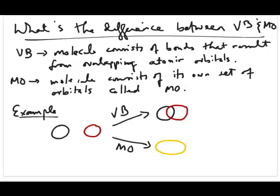In the valence bond model, remember that molecule is represented as consisting of bonds, these bonds as a result of overlapping atomic orbitals. So each atom has its own set of valence orbitals, which could be the regular or the hybrid orbitals.